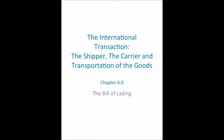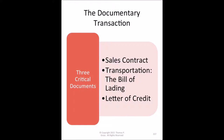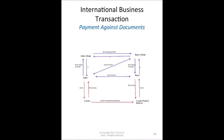This video reviews the bill of lading, which is used in international transactions. Using a diagram of the international transaction, we see the sales contract covering offer and acceptance, force majeure events, and we're in the lower portion where the seller has delivered the goods to the carrier and the carrier has issued the bill of lading to the seller.